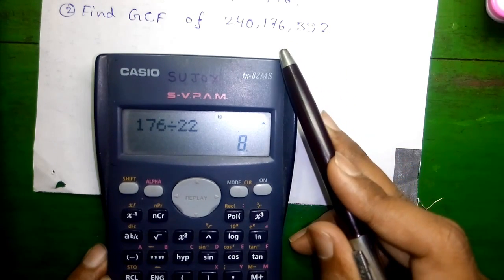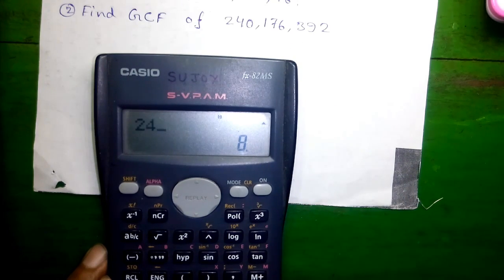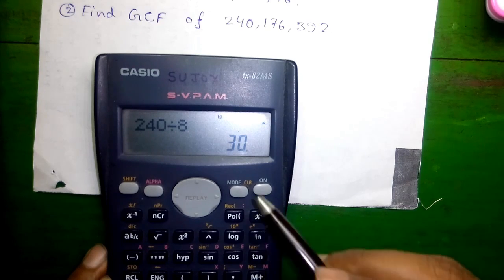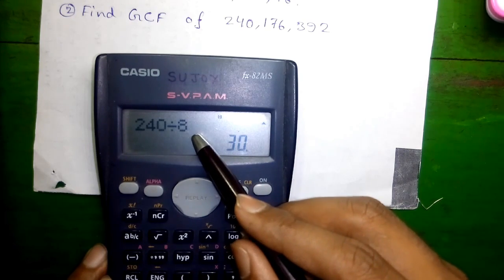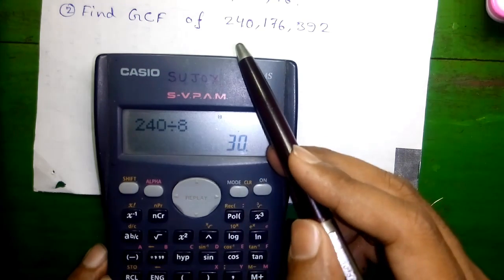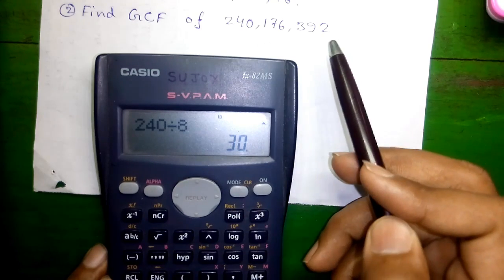Next we will divide 240 by the common GCF 8. Since 240 is wholly divisible by 8, 8 is the common GCF of 240, 176 and 392.